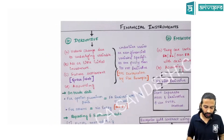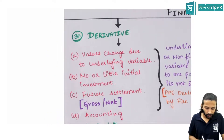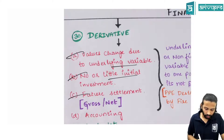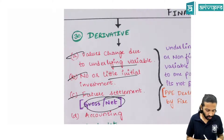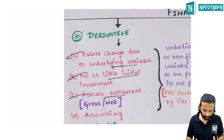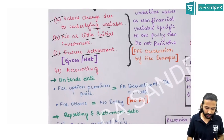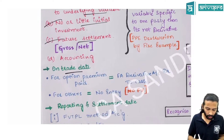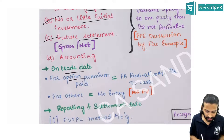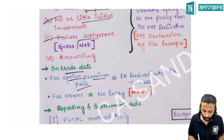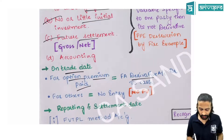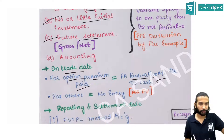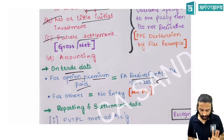A derivative has three features: its value changes due to an underlying; initial investment is little or no; and settlement is in the future (gross or net). On the trade date, if a premium is paid (e.g., for options), it is treated as a financial asset: debit derivative, credit bank. For forward contracts with no premium, no journal entry is passed on the trade date since there is no fair value.